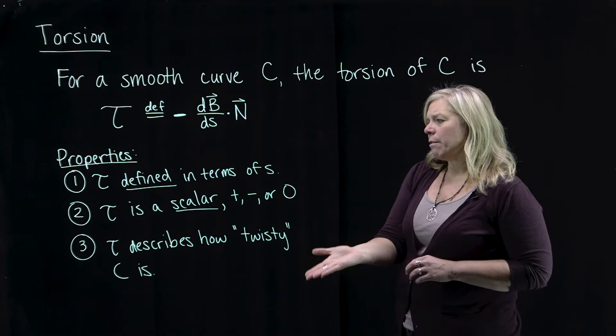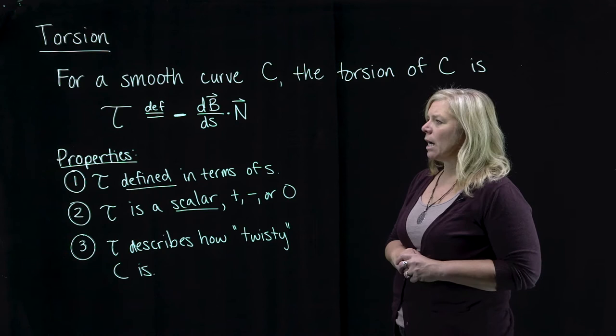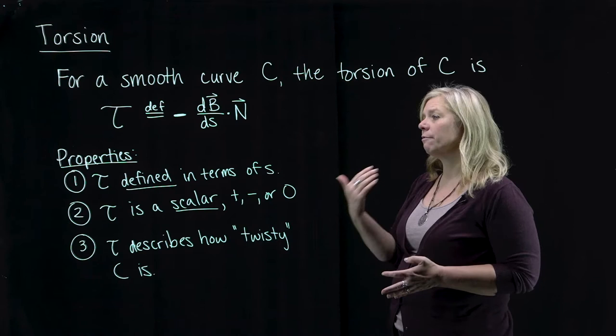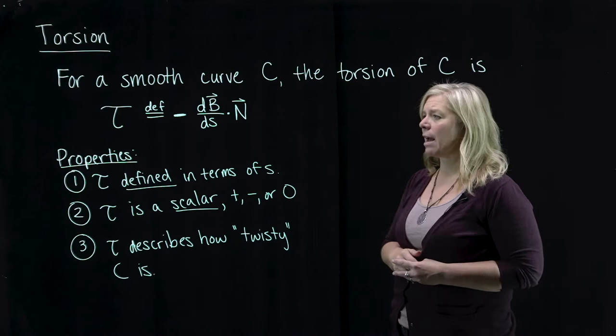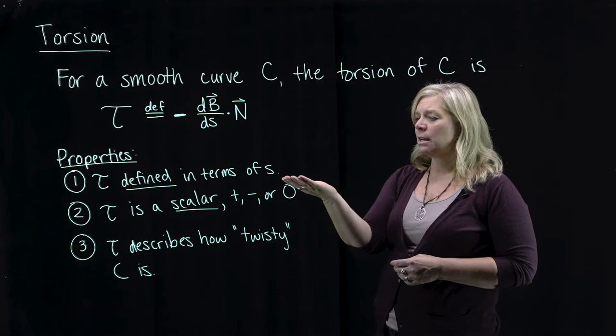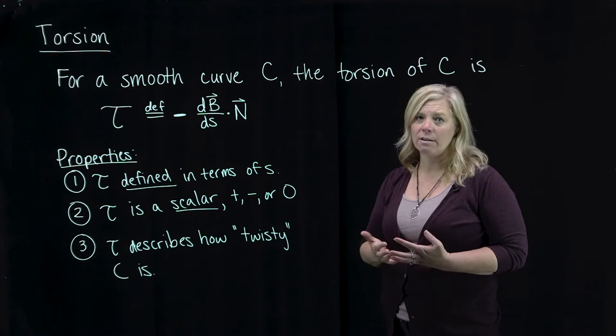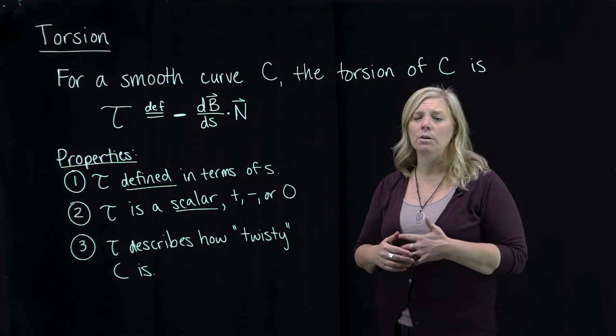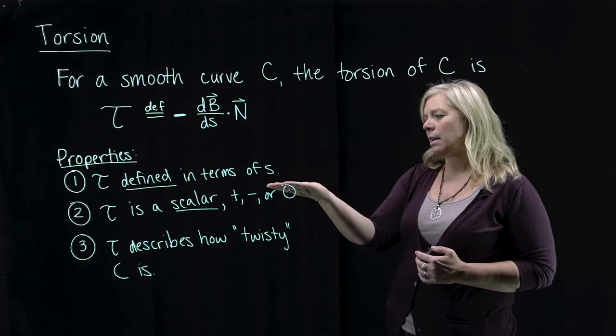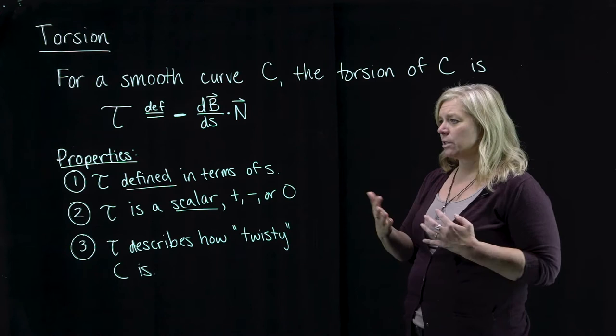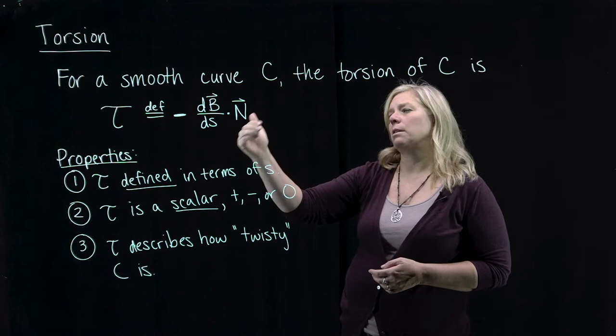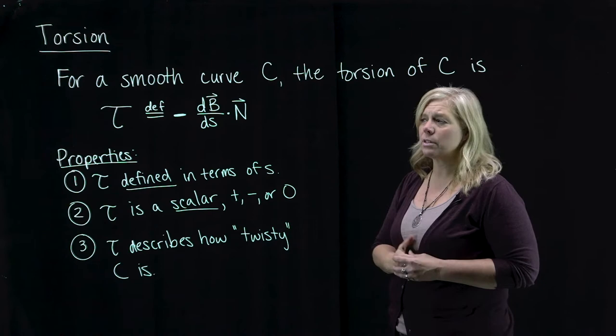A couple of important concepts related to the properties of torsion: as with curvature and as with the T, N, and B vectors, torsion is defined in terms of arc length s. Since B and N are both defined in terms of s, and we have a rate of change with respect to s, torsion is a descriptor of the geometry of the curve. Torsion is a scalar — we can see that from the dot product of two vectors — and it can be positive, negative, or zero.